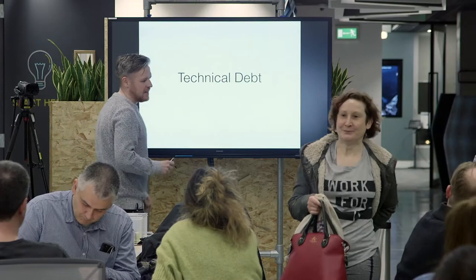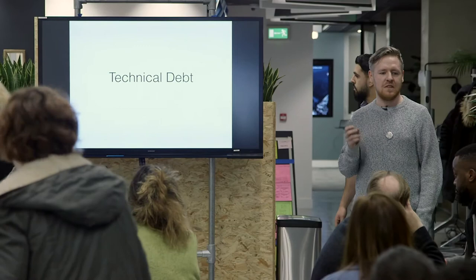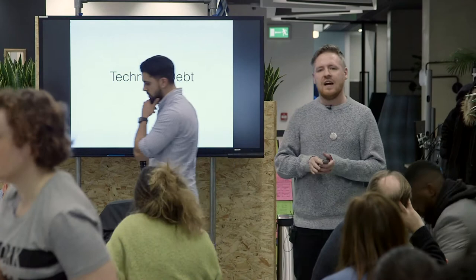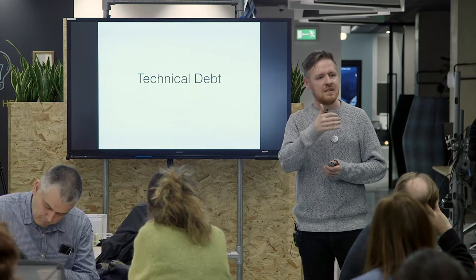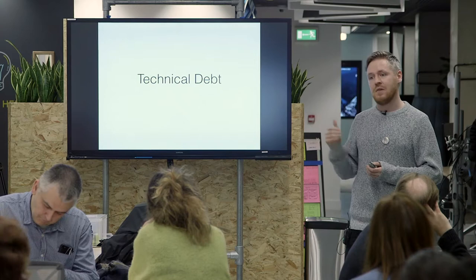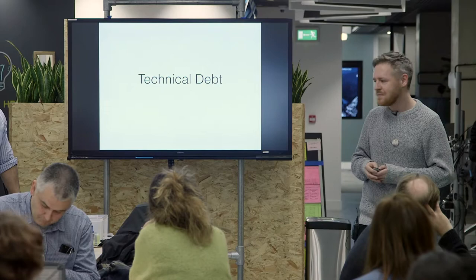Technical debt was a term coined by Ward Cunningham, one of the signatories on the original Agile Manifesto. He was working within a financial organization and needed a way of teaching people about opportunity costs, the value of rework, and several forms of waste. What he discovered is that a lot of these concepts mapped to the debt concept and compounding interest in the financial industry. So he created the technical debt metaphor as an educational tool — that's all it ever was, a way of teaching things.